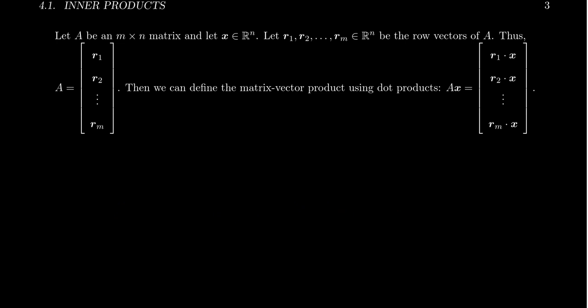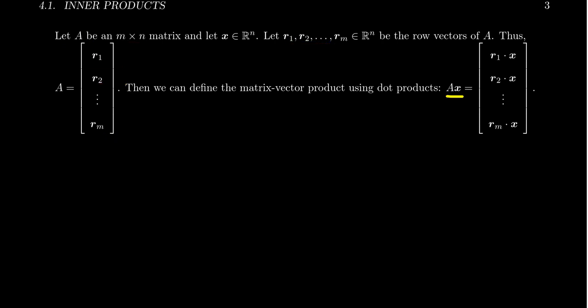If we have A as an M by N matrix and a vector X in Rn, consider the row vectors of A. When you multiply A times X, you can view it as dot products: you take the dot product of R1 and X for the first entry, R2 dot X for the second, all the way down to Rm dot X. So if we take the matrix [1,2,3; 4,5,6] times the vector [0, 3, -5], you take the first row times the column — that's just the dot product of those two vectors.